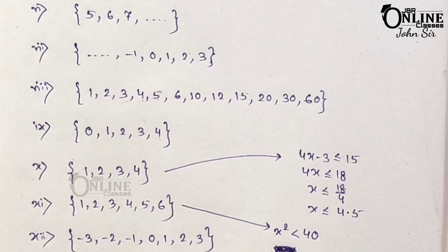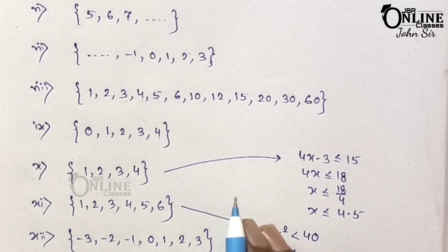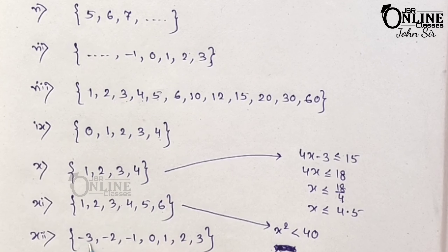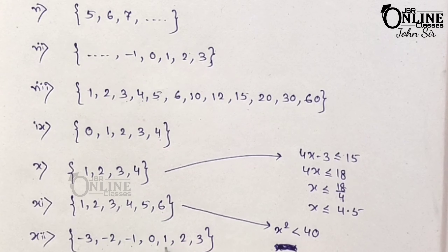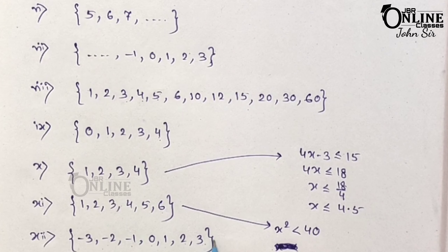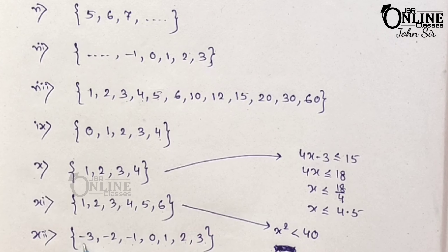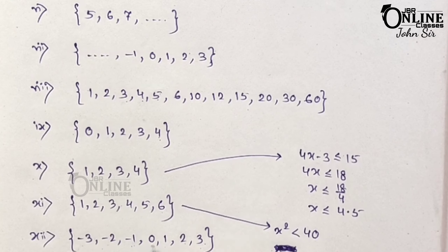Sum number 12: x such that x belongs to integers and x squared is less than 16. Since squaring a negative number also gives a positive result, minus 3 squared = 9, minus 2 squared = 4, minus 1 squared = 1, 0 squared = 0, 1, 2, 3. Now 4 squared = 16, but the condition is less than 16, not equal. So minus 3 is the start and 3 is the end: {minus 3, minus 2, minus 1, 0, 1, 2, 3}.